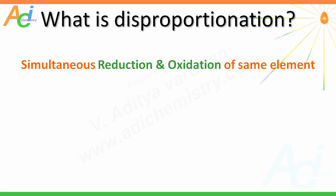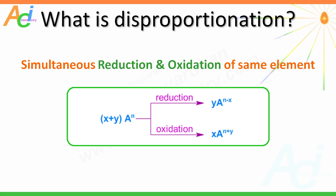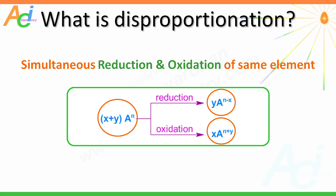Let us start with what is a disproportionation reaction. It is a redox reaction involving simultaneous reduction and oxidation of the same element from one oxidation number to two different oxidation numbers. For example, as shown on the screen, atom A in the oxidation state N is reduced to N minus X oxidation state, as well as oxidized to N plus Y oxidation state simultaneously. This is a general representation of a disproportionation reaction.